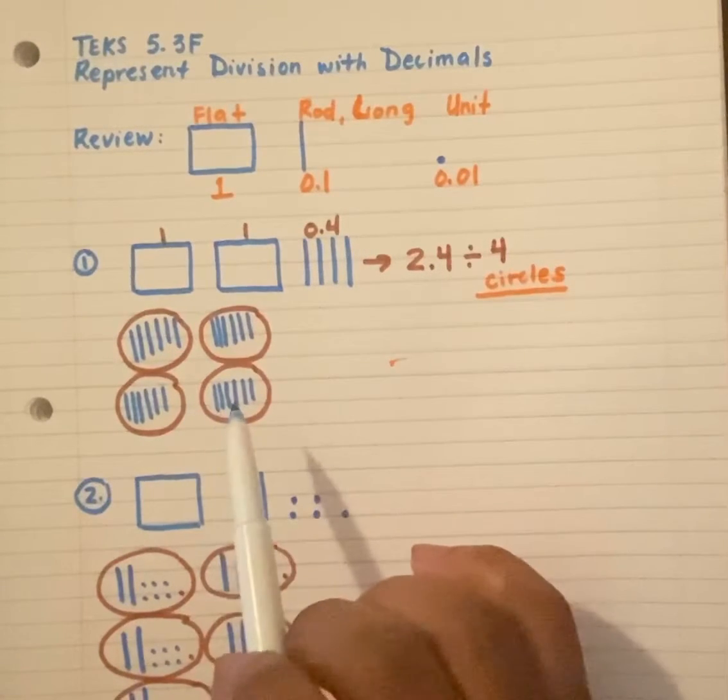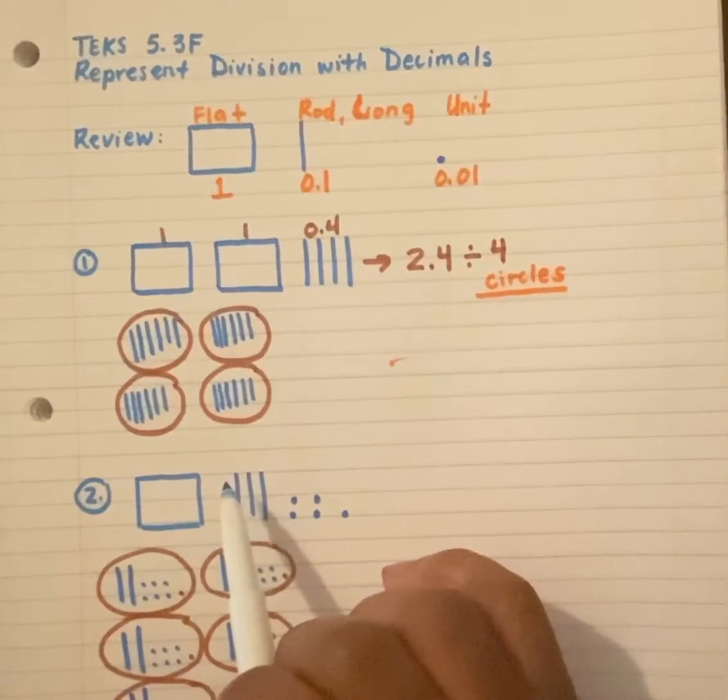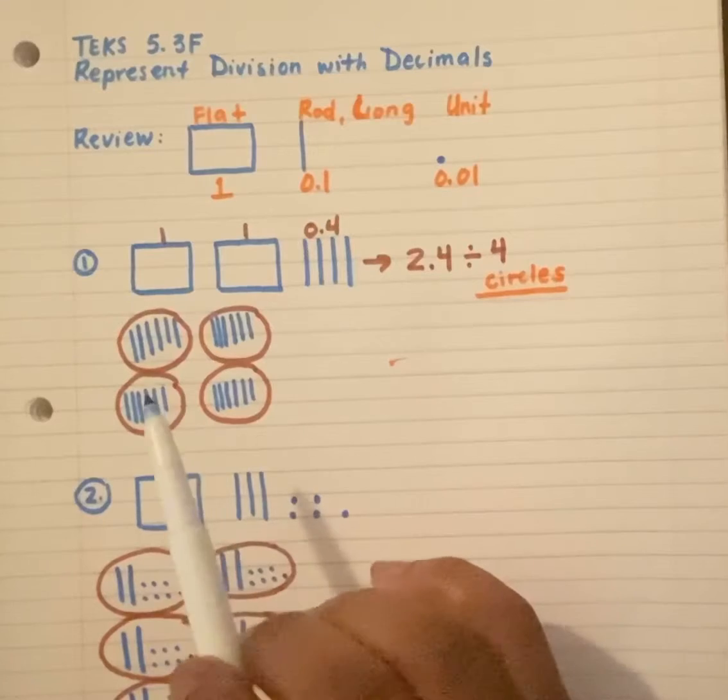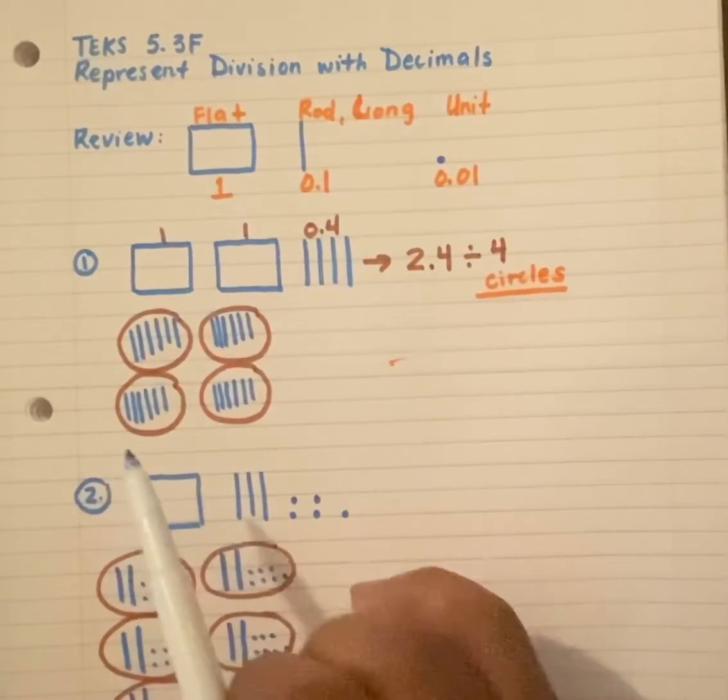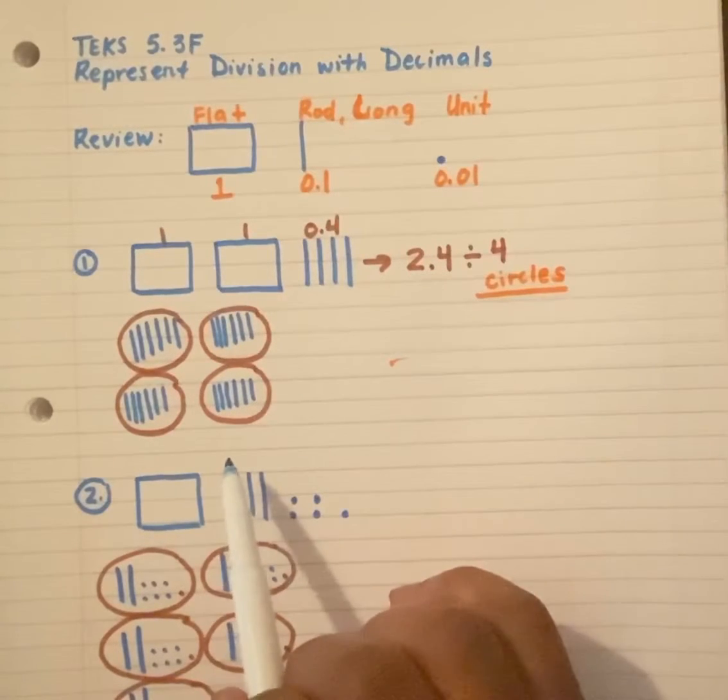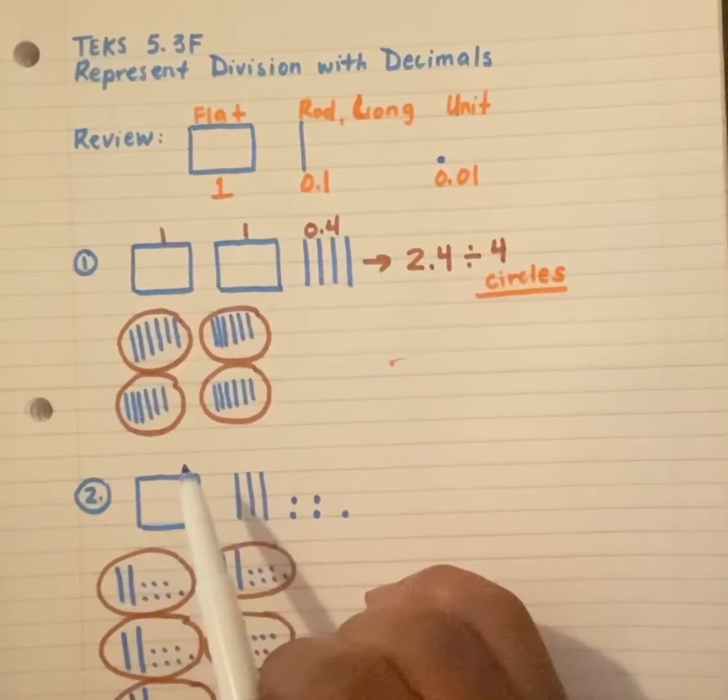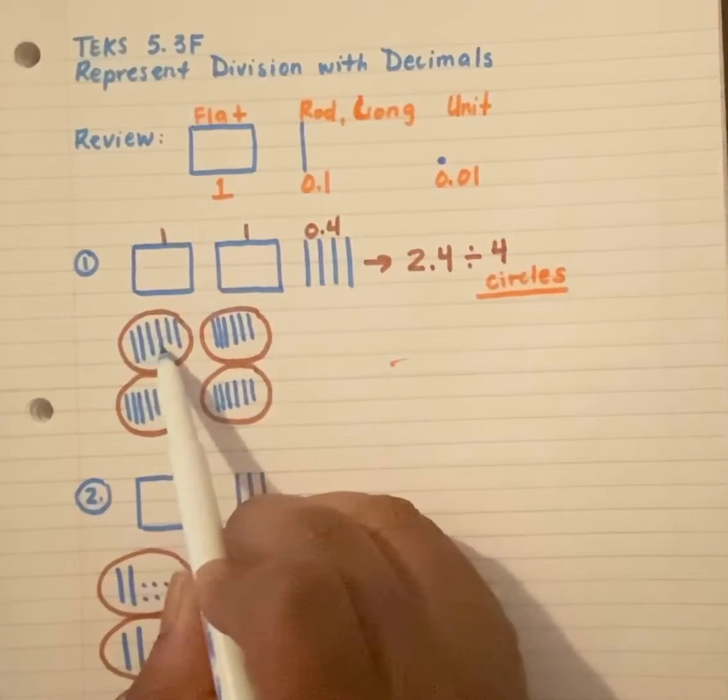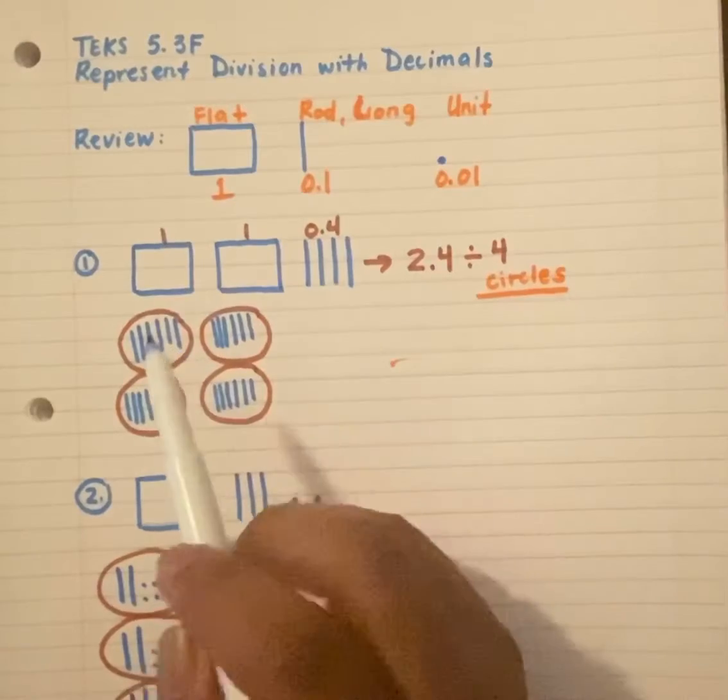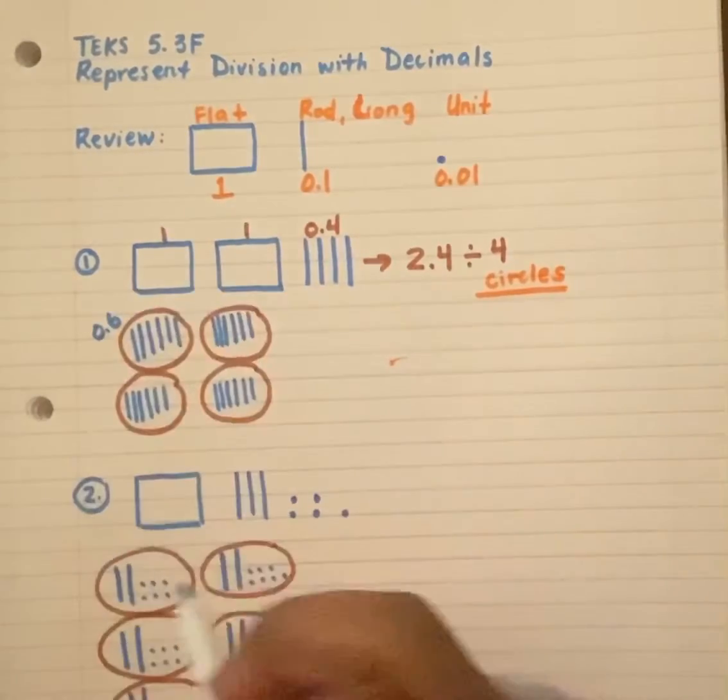Now, let's make sure each group has the same exact number inside. Remember, when we're dividing, we try to get to a complete even number or the same amount of pieces in each group. Once again, our goal is to have the same amount of pieces in each group. So I have ten, twenty, thirty, forty, fifty, sixty. So this right here is six tenths or six dimes.